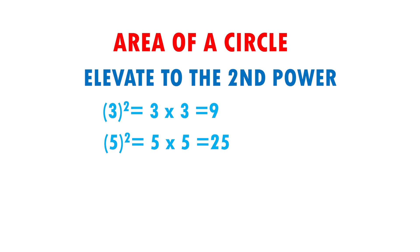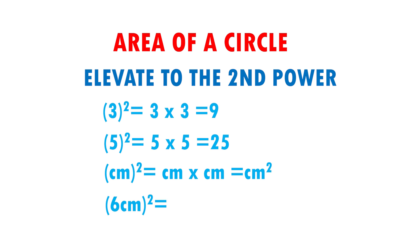Now, here I have 6 centimeters squared. This means that 6 centimeters is going to multiply by itself two times. I have 6 centimeters times 6 centimeters.